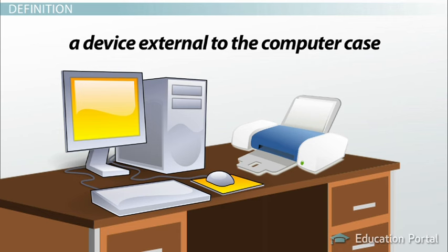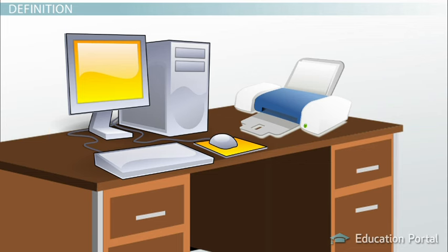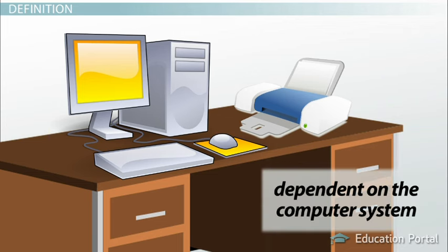You connect the device to the computer to expand the functionality of the system. For example, consider a printer — once the printer is connected to a computer, you can print out documents. Another way to look at peripheral devices is that they are dependent on the computer system. For example, most printers can't do much on their own, and they only become functional when connected to the computer system.